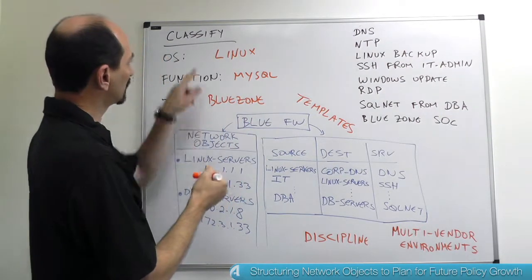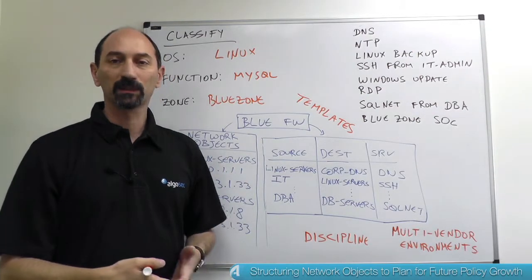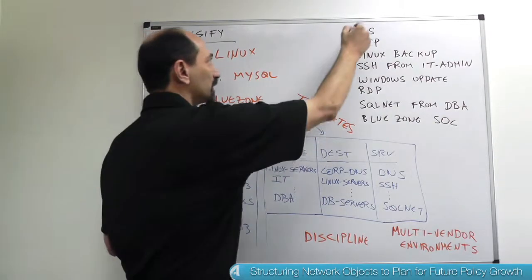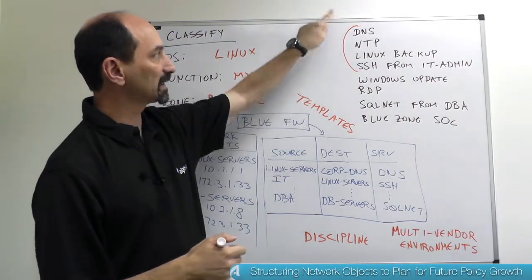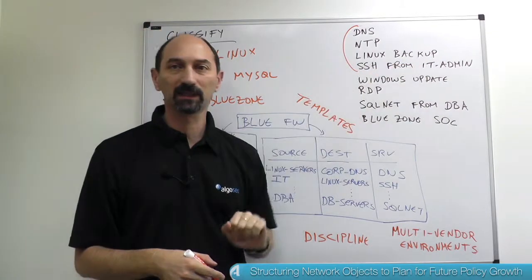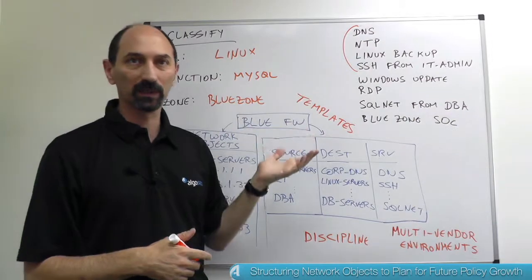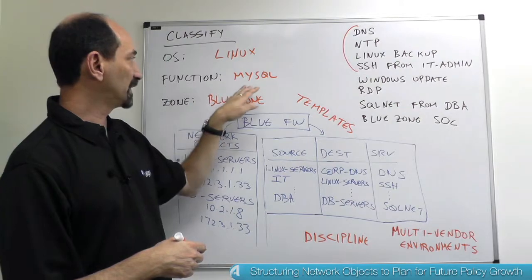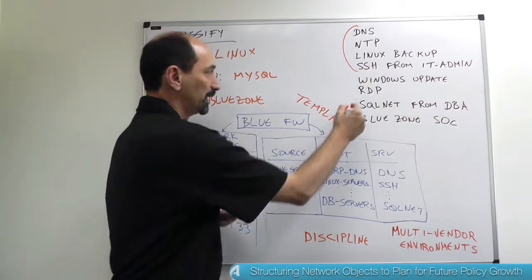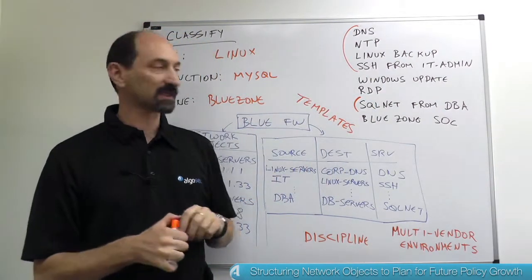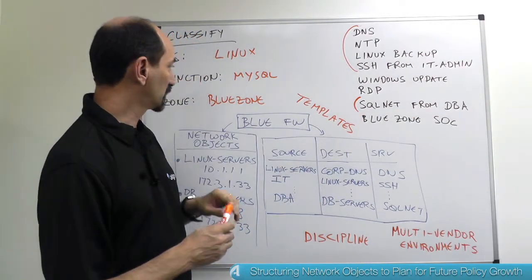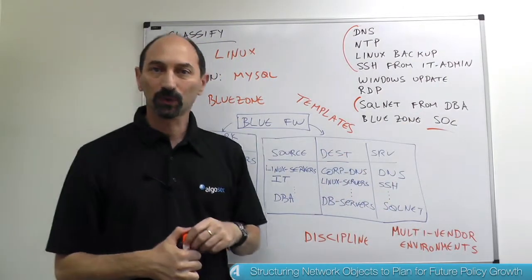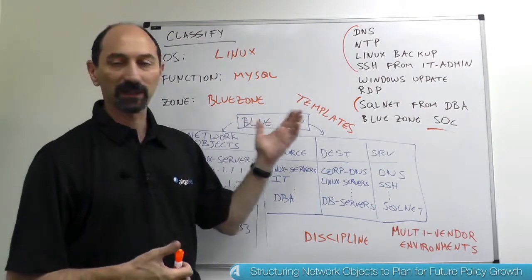Each one of these categories actually implies the requirement for certain types of network access. For instance, if it's a Linux server, then you probably want to allow DNS access and SSH for the IT administrators to access that device, whereas if it were a Windows server, you would require other types of access. Similarly, if it's a database server, you would probably need SQL Net access from the DBA workstations. And if it's placed in the blue zone, then you want to allow access from the blue zone security operating center so that they can troubleshoot.